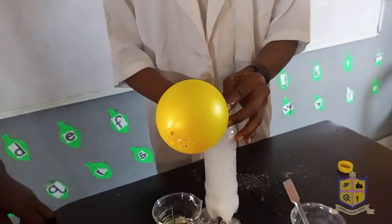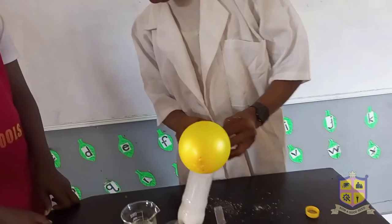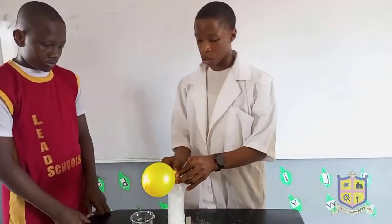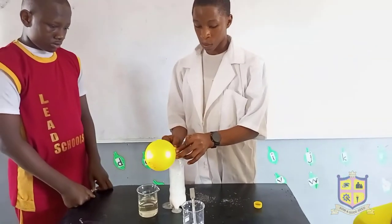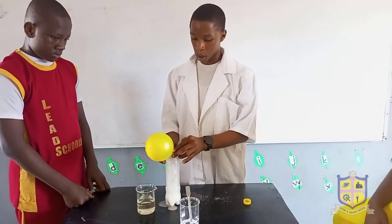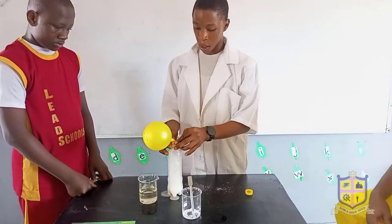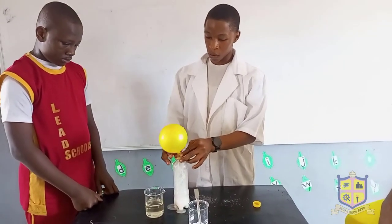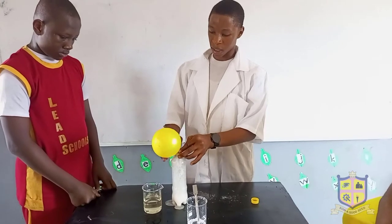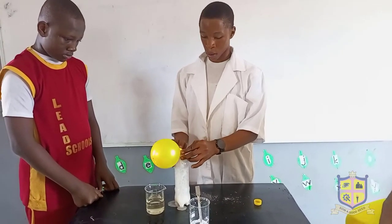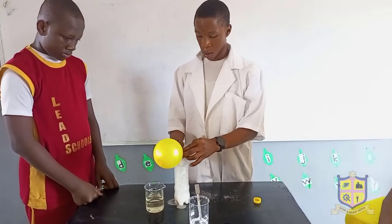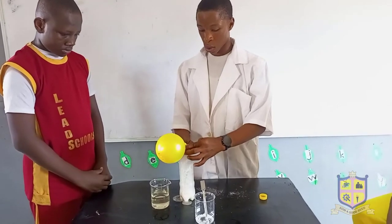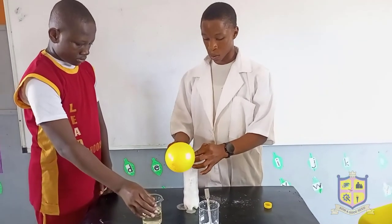This reaction occurs because when dilute acid meets sodium bicarbonate, they release the gas carbon dioxide — carbon dioxide gas — and that's the gas that's trapped inside the balloon. The gas is what causes the inflation of the balloon.